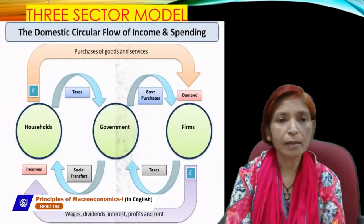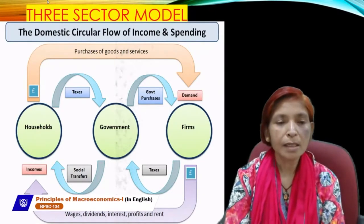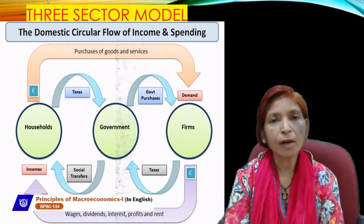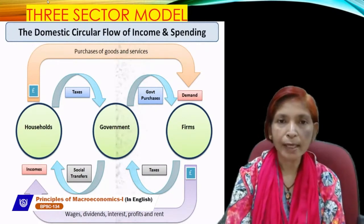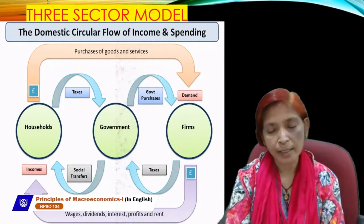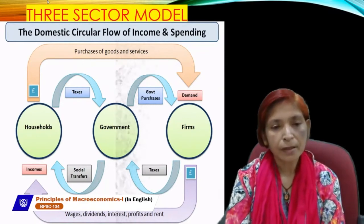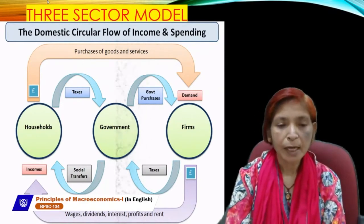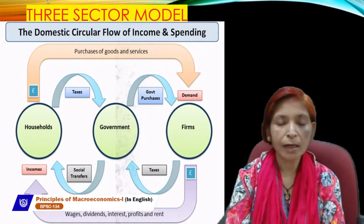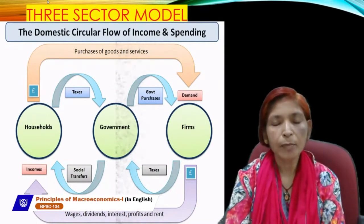The next model is the three-sector model, in which three sectors exist: the household sector, the government sector, and the firm sector. Households provide factors of production to both the government sector and the firm sector. Government and firms are the main producing sectors — some goods are produced by government, and firms generally produce all goods and services required by the country.